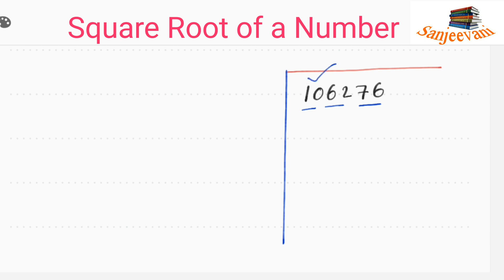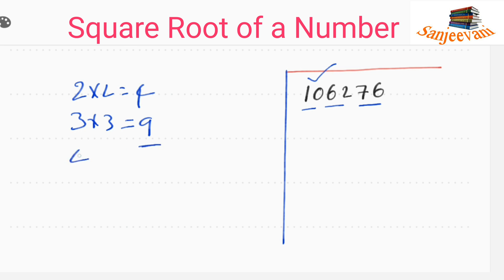For the first pair, we have to choose a number whose square is exactly equal to or less than 10. For example, 2×2=4, 3×3=9 — we get 9. The next choice would be 4×4=16, which is more than 10. So we go with 3, since 3×3=9.